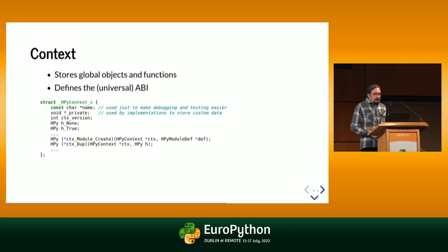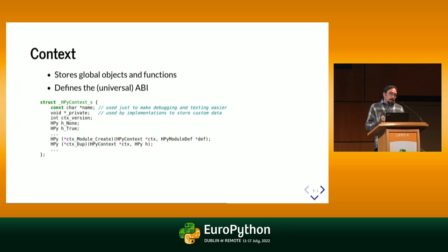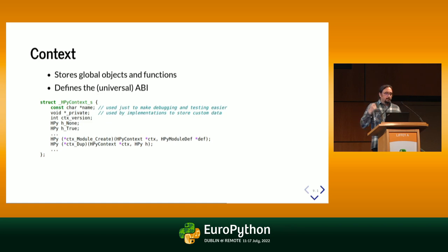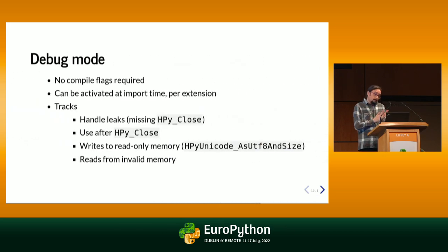Going into a bit more detail, there are three kinds of handles. HPy handles are only for short-lived references — local variables. We use something different for storing objects, which is really helpful for garbage collectors. The context looks like this: you have a place to store private data and a version field. The context stores handles to built-in objects and the whole ABI of HPy as a bunch of function pointers. All of HPy is implemented by calling through this context — when you call a function in HPy, it's really doing ctx->ctx_Number_Absolute.